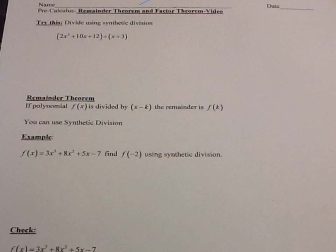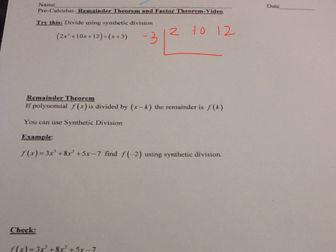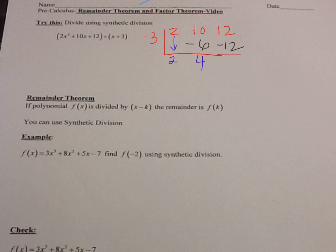When we do synthetic division, I have 2x squared plus 10x plus 12 divided by x plus 3. I'm going to draw my bar here, put my negative 3 on the outside. Remember, it's opposite the sign that's on the inside of your binomial. I take all my coefficients: 2, 10, and 12. I bring this 2 straight down, multiply — negative 3 times 2 is negative 6. Add straight down, 10 minus 6 is 4. Multiply negative 3 times 4, I get negative 12. Add straight down and I get 0. So what I get is 2x plus 4.